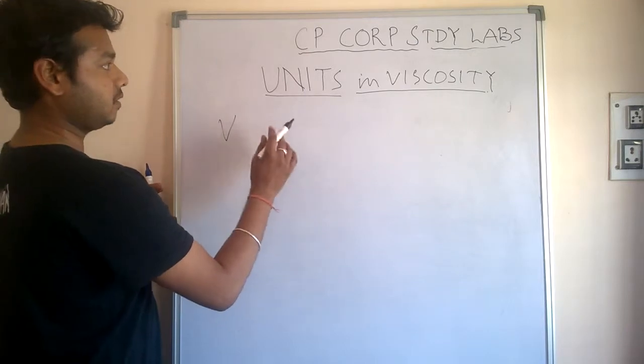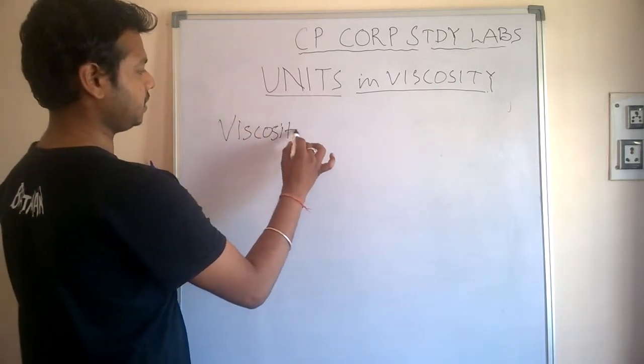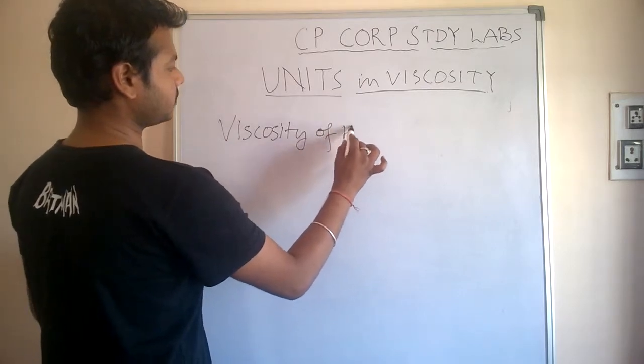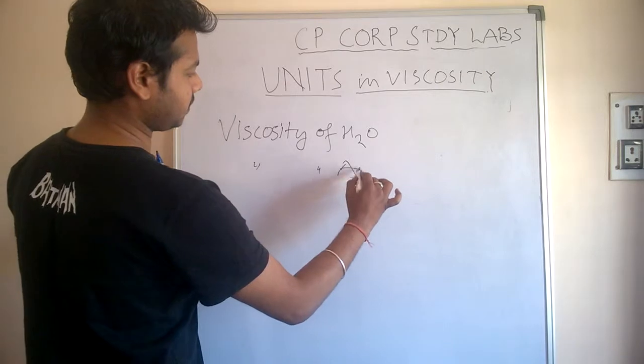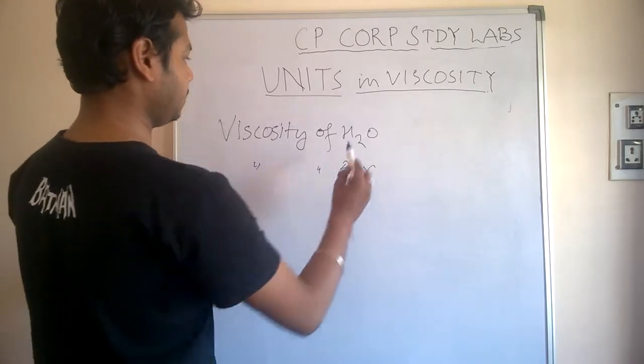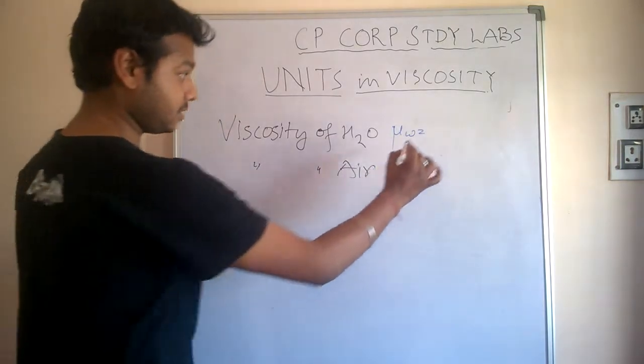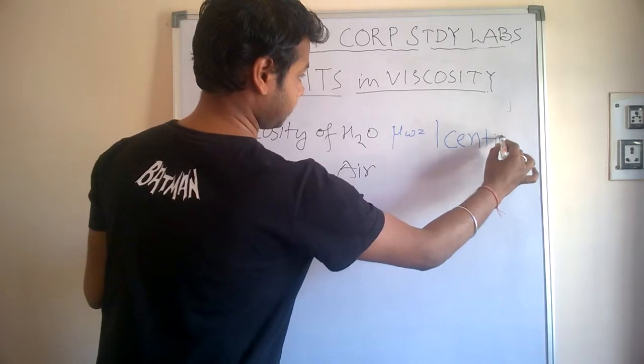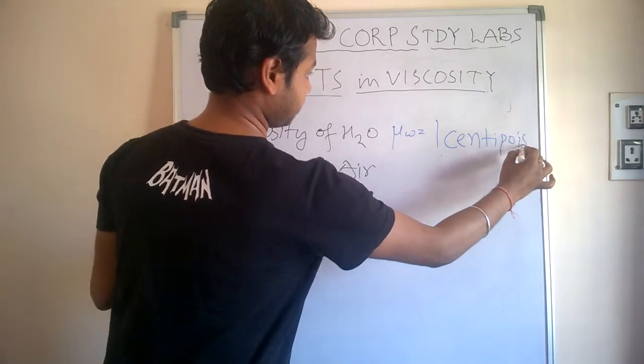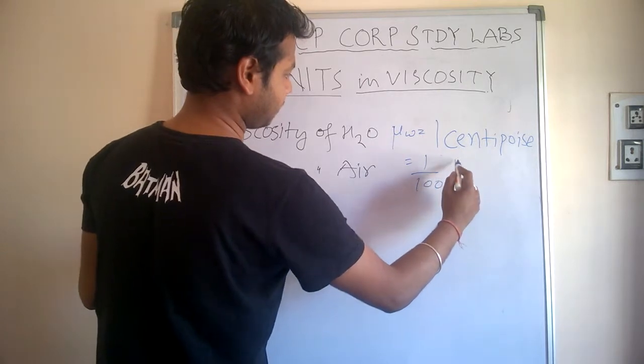Two important things you have to remember: viscosity of water. The value is one centipoise. Viscosity of water is one centipoise. Centi means one by hundred of poise.